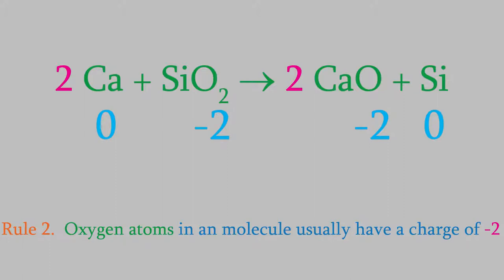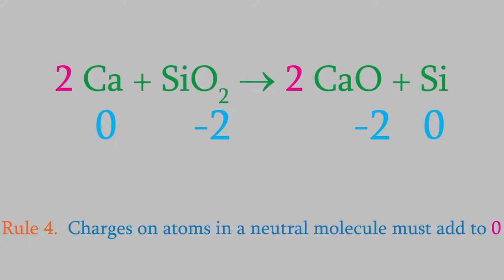Now for the other atoms. Rule 4 tells us that the charges on the atoms in a neutral molecule must total zero. In the case of the silicon dioxide, that means that the silicon must have a charge of plus 4 to counteract the two oxygen atoms. In the case of calcium oxide, the calcium must have a charge of plus 2. And that's it!